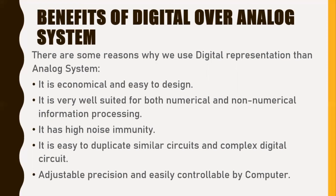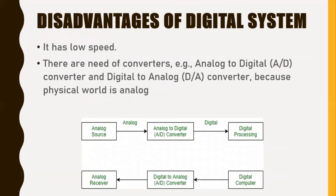Digital systems are also easy to handle by computer. Now, some disadvantages of digital systems over analog systems: digital systems have low speed, and we need converters to use them, such as an analog-to-digital converter and a digital-to-analog converter. Because our physical world is still in analog, while computers work digitally, we have to bridge this gap in order to convey our messages easily.